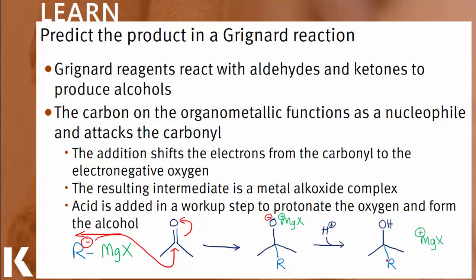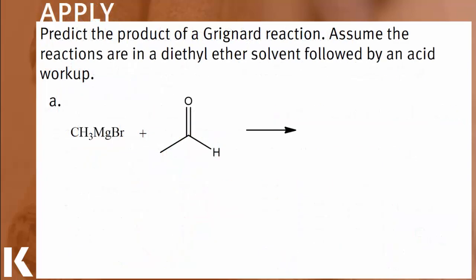In the process, the alkyl group of the Grignard reagent adds to the electrophilic carbon, which is why Grignard reactions are an example of a nucleophilic addition reaction. Let's see some examples of this in our apply question, where we're asked to predict the products of the following Grignard reactions.